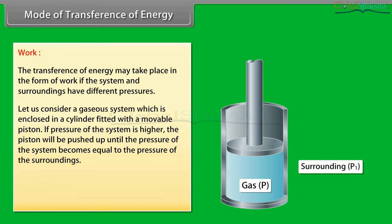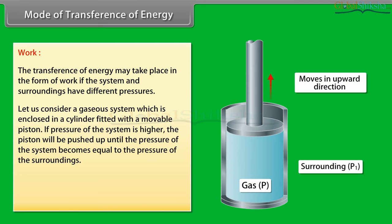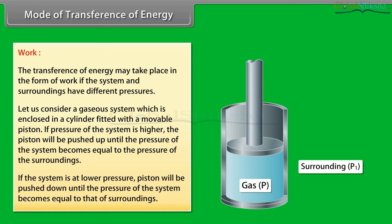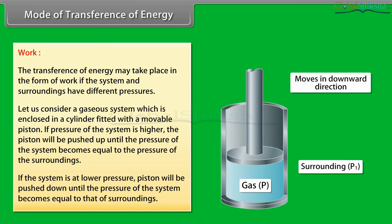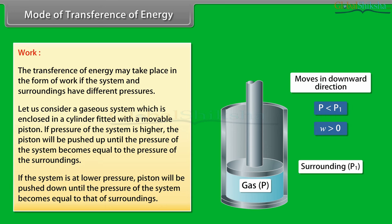Work: the transference of energy may take place in the form of work if the system and surroundings have different pressures. Consider a gaseous system enclosed in a cylinder fitted with a movable piston. If the pressure of the system is higher, the piston will be pushed up until the pressure of the system equals the pressure of the surroundings. If the system is at lower pressure, the piston will be pushed down until the pressure of the system equals that of the surroundings.